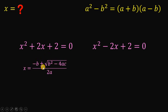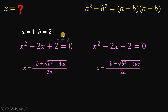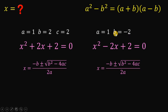The quadratic formula is: negative b plus or minus the square root of (b squared minus 4ac), all over 2a. We apply this to both equations. For the first equation, a equals 1, b equals 2, and c equals 2. For the second equation, a equals 1, b equals negative 2, and c equals 2.